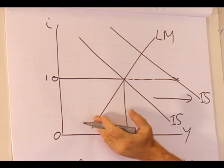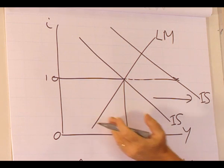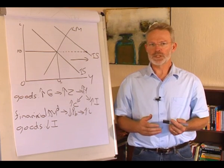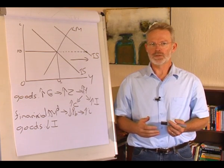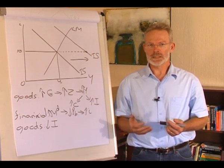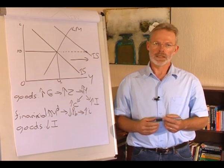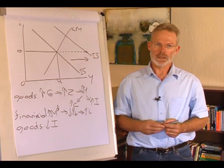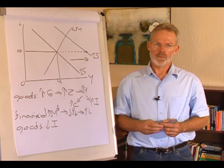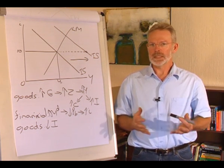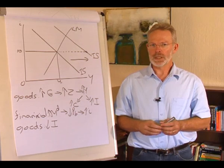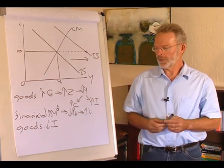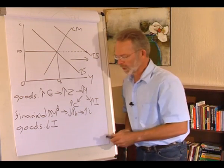We now see that an increase in government spending leads to an increase in the interest rate and an increase in the level of output. But how did this increase in government spending affect the other variables in our model?